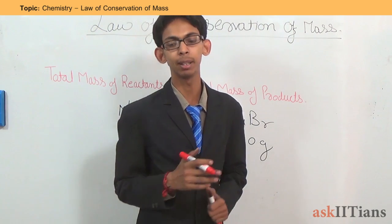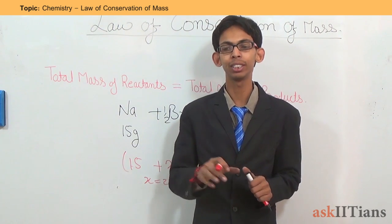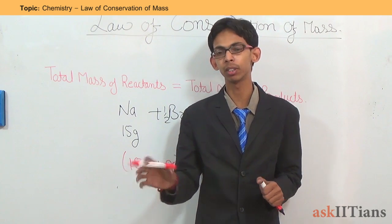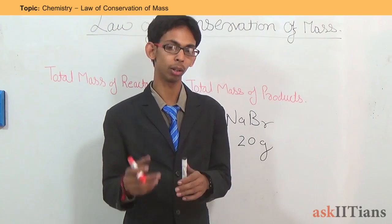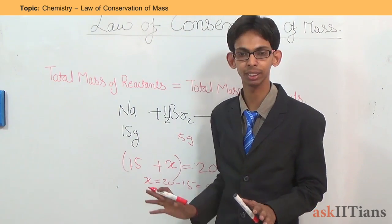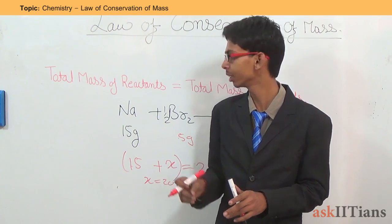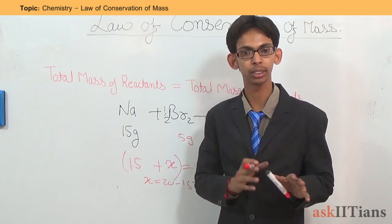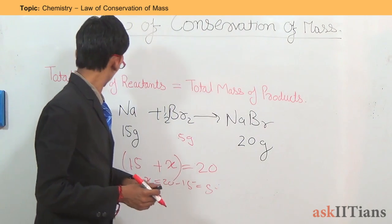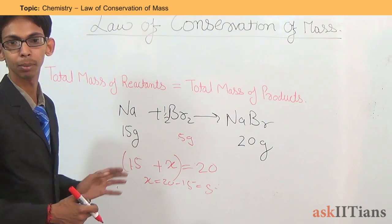This law of conservation of mass is followed by almost every chemical equation. Why almost? Because there are some nuclear reactions in which there is a loss of energy, and energy is related to loss in mass — that is E equals mc², which is Einstein's famous formula. Apart from nuclear reactions, almost every reaction follows the law of conservation of mass. If there is a difference in mass, it is so small that we can neglect it. Overall, mass is conserved during ordinary chemical reactions.